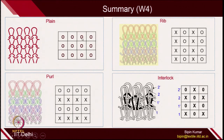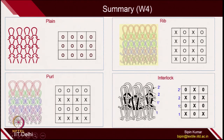Plain fabric, where you have all technical front loops. Rib fabrics, where you have technical front and back loops alternately in the same course. Purl fabric, where you have different machines and you have to transfer the entire loops from one bed to another. And interlock fabrics, where you have 2 sets of needles — long butt needles and short butt needles in the same bed.